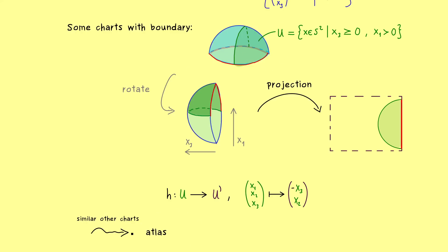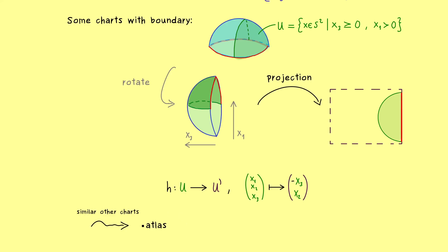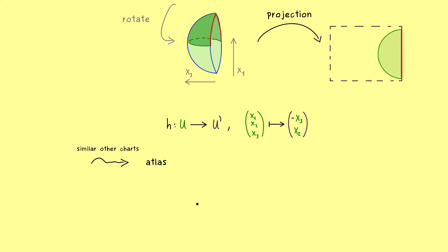And then the result is that we have a whole atlas for our northern hemisphere, which is a manifold with boundary.